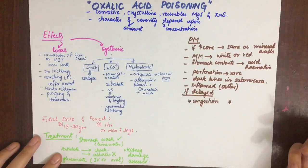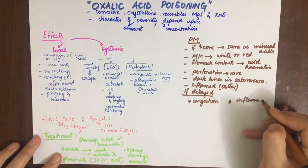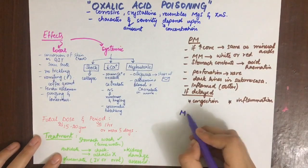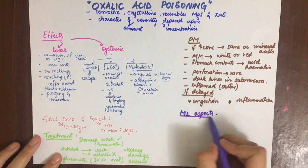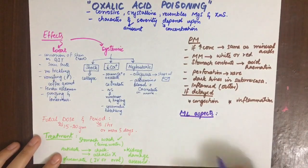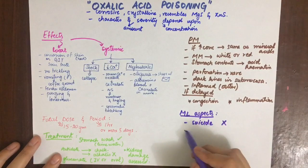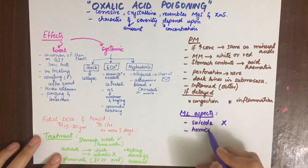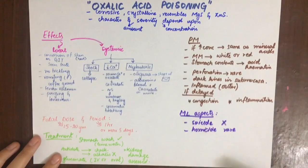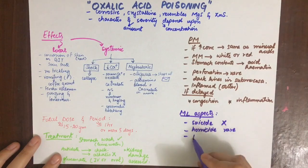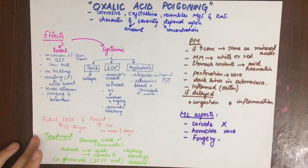If there is delayed poisoning and the person seems to survive, there is congestion of the lungs, liver, kidneys, and brain. Inflammation of the small intestine and kidneys is also observed. The medico-legal aspects include: not used for suicide, not used for homicide, but can be used in forgery to erase writing.